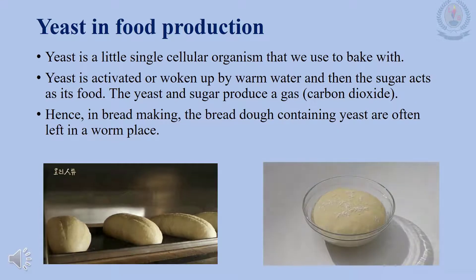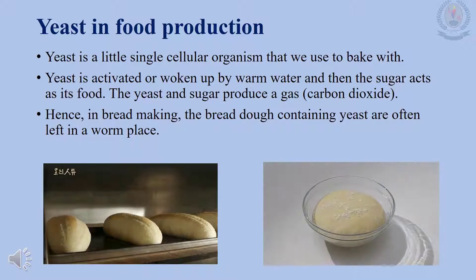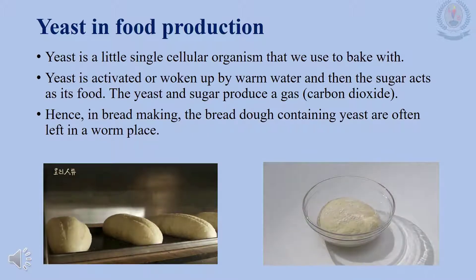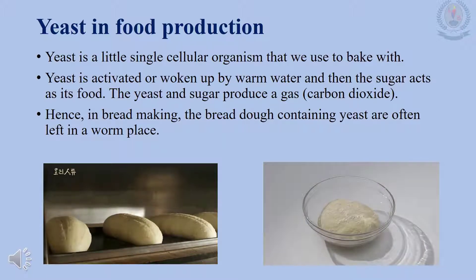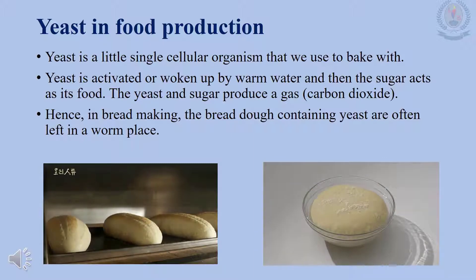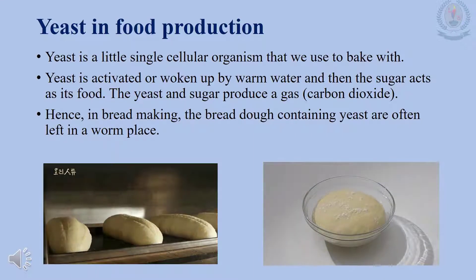Microorganisms can also be used in food production. Yeast is a microscopic organism which converts sugar into alcohol and carbon dioxide. Yeast is a little single-celled organism that we use in baking. Yeast needs both a warm environment and food to grow. The process is often called proofing the yeast. Yeast should be dissolved in warm water — but not hot water, or it will die.